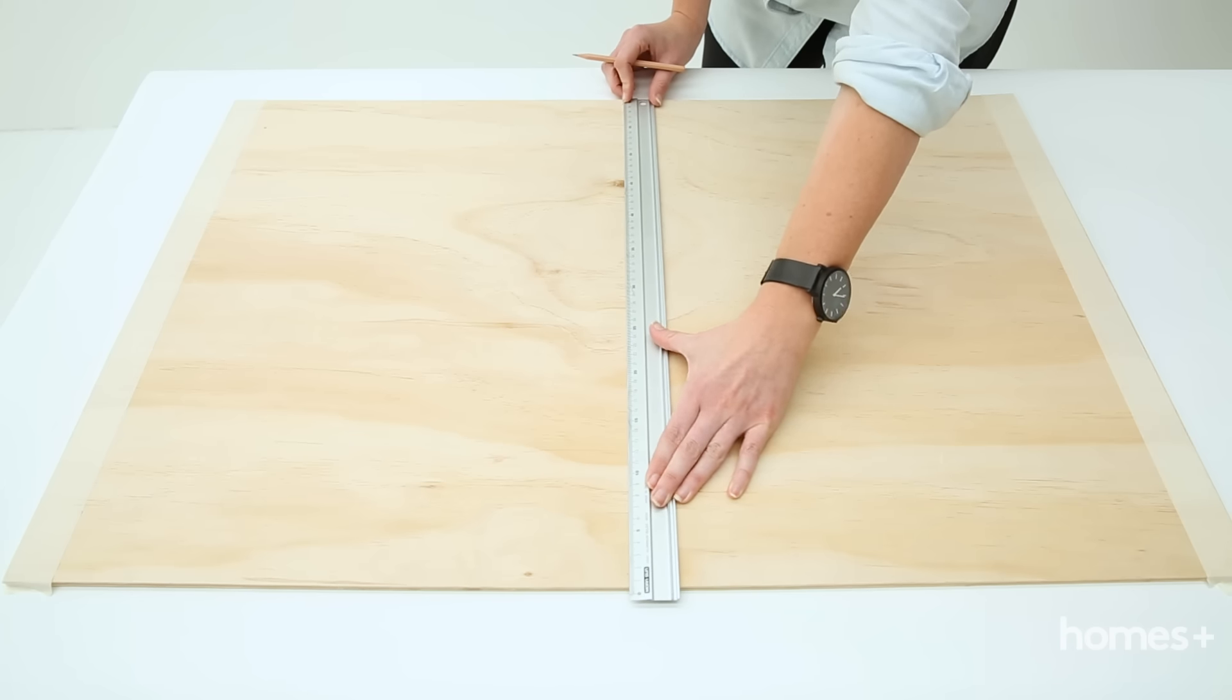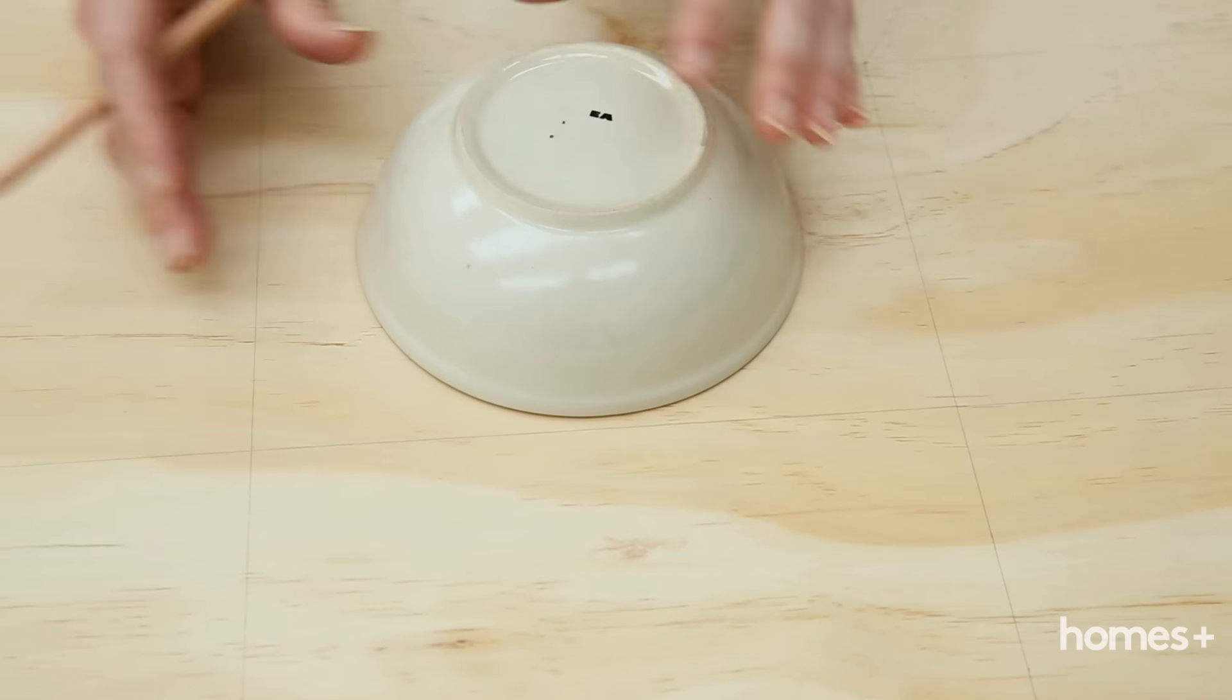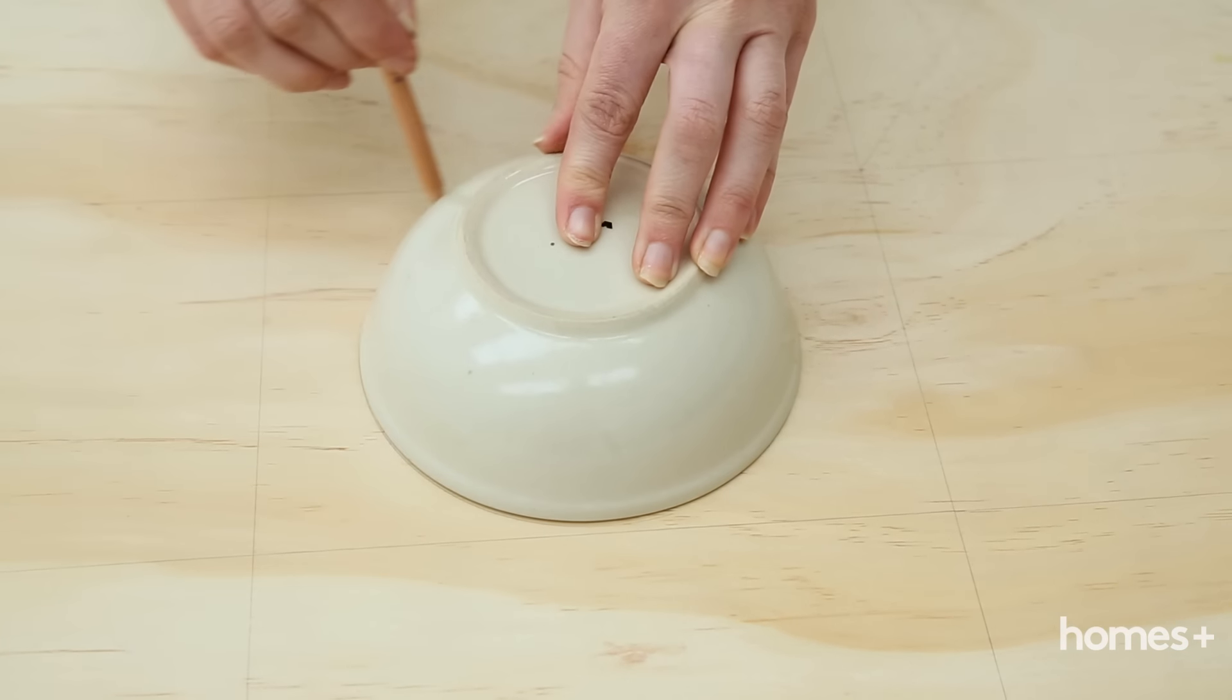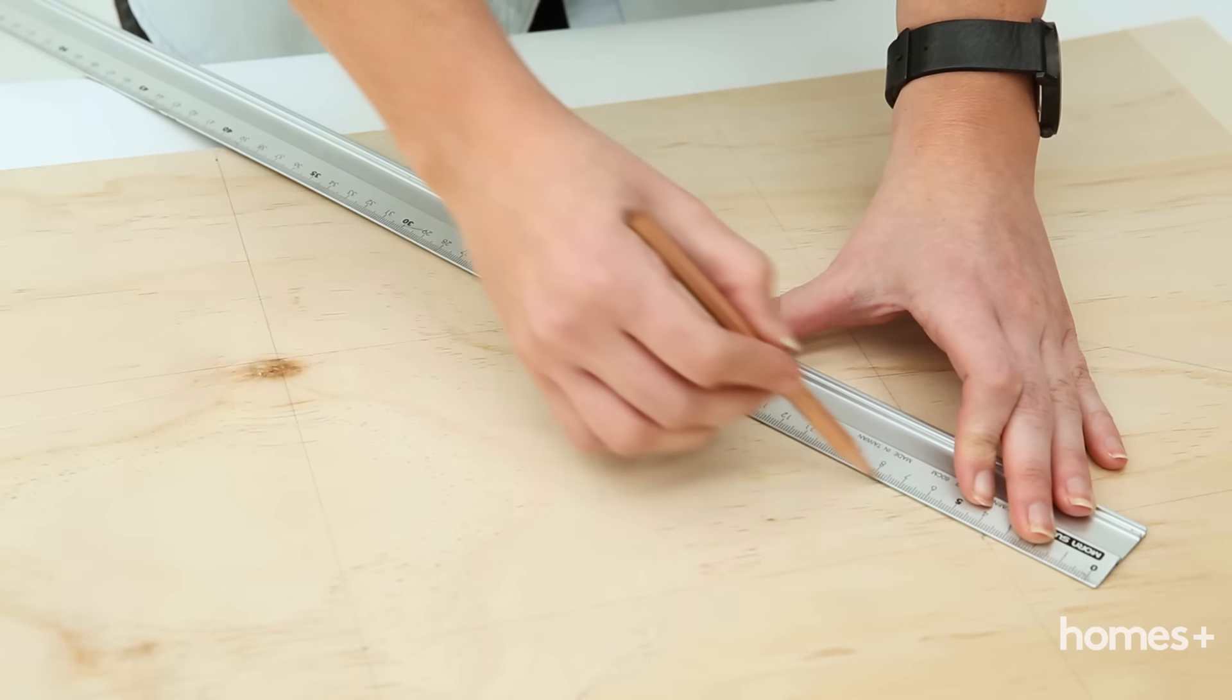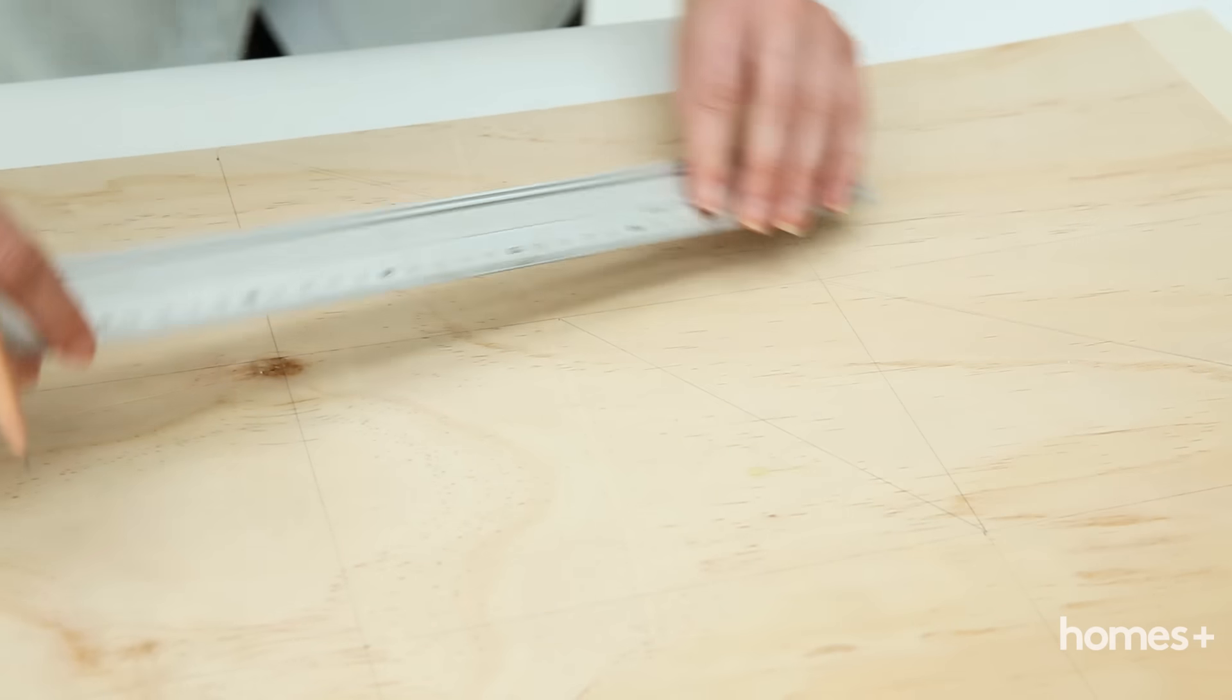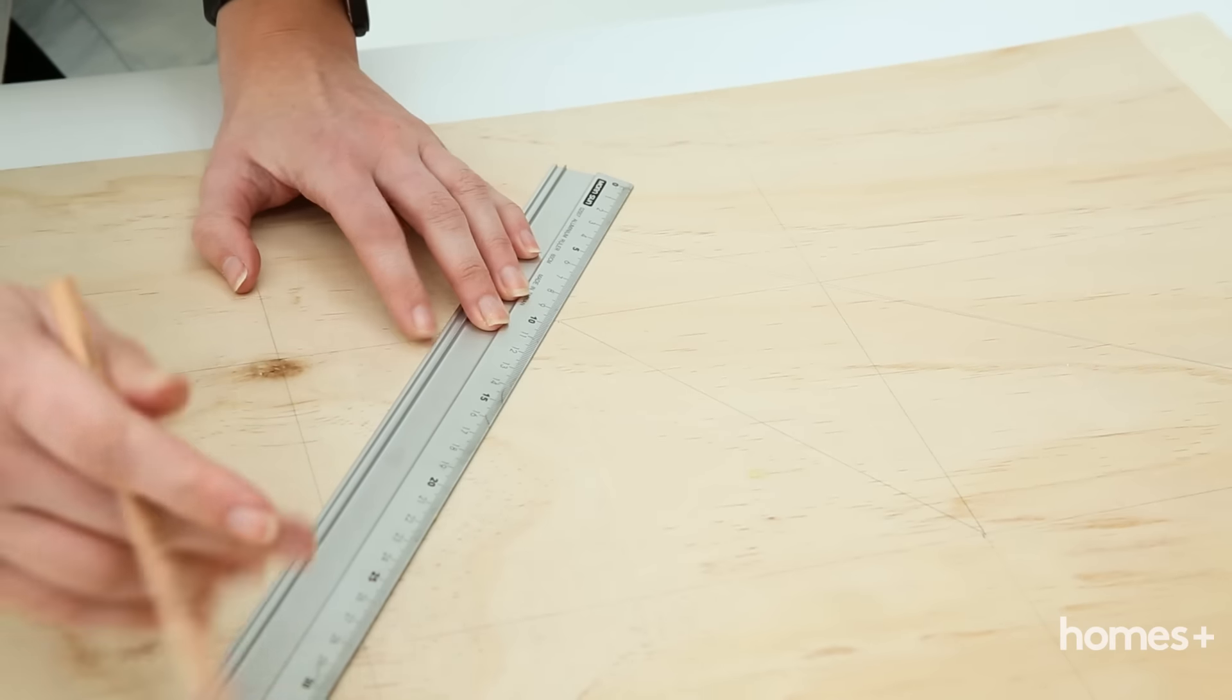Now you can start drawing your shapes. For circles, trace around the outside of an upturned bowl that fits within one of your squares. For triangles, join the corner points to the centre of the square and simply draw a diagonal line through the corners of the grid.